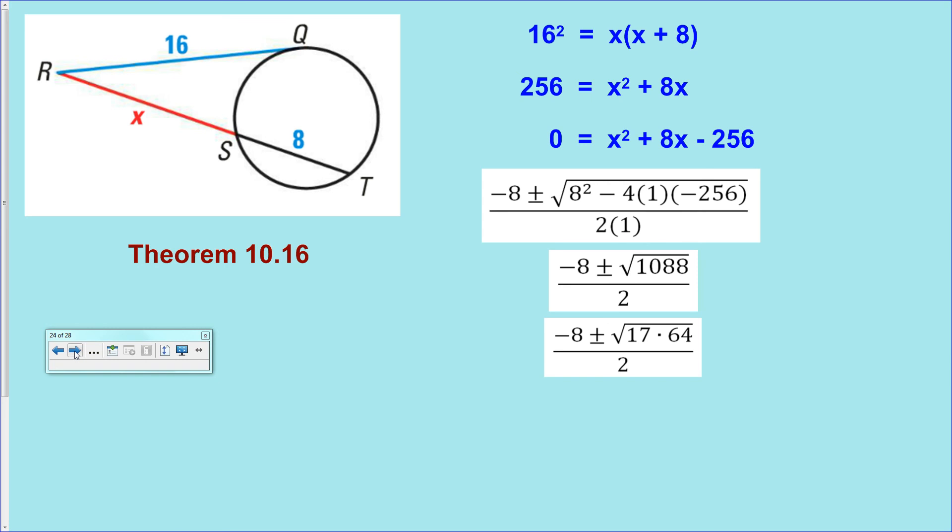64 times 17 is 1,088. And that means that we can take the square root of 64 separately and pull an 8 on the outside of the radical. And then we can divide both the 8s by 2 to simplify a little bit. And we finally get that.